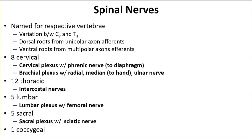Spinal nerves are named for their respective vertebrae. A spinal nerve is composed of bundles called fascicles, each composed of numerous neurons, and is surrounded by three tissue layers: the epineurium (outer), perineurium (middle), and endoneurium (inner). There are 31 pairs of spinal nerves, and all are mixed nerves. The cervical plexus covers C1 through C5 and mostly consists of cutaneous nerves supplying the skin. The phrenic nerve, the single most important cervical nerve, innervates the diaphragm for breathing, originating from C3 to C5.